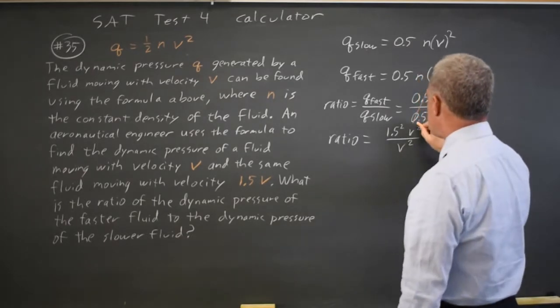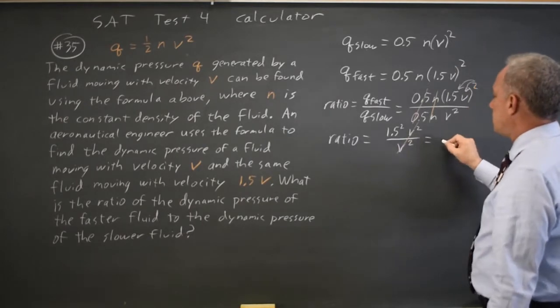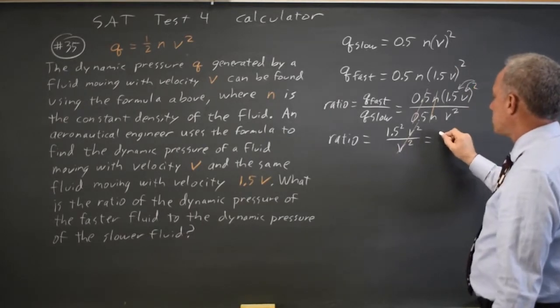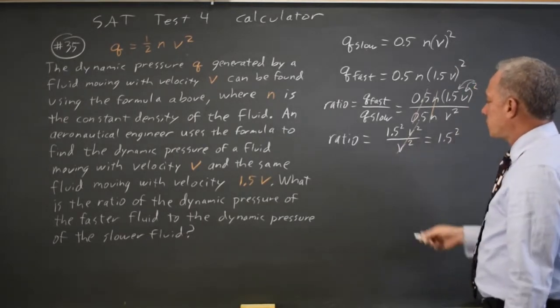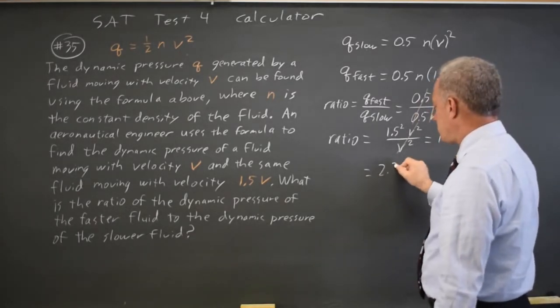V squared over V squared, well, anything over itself is 1. So my ratio is 1.5 squared, which on my calculator should be 3 half squared is 9 fourths, or 2.25.